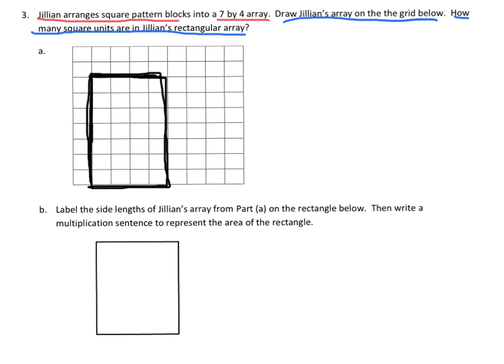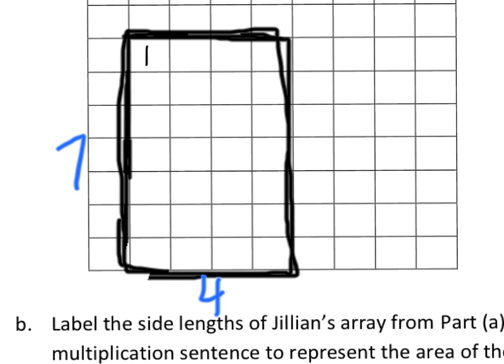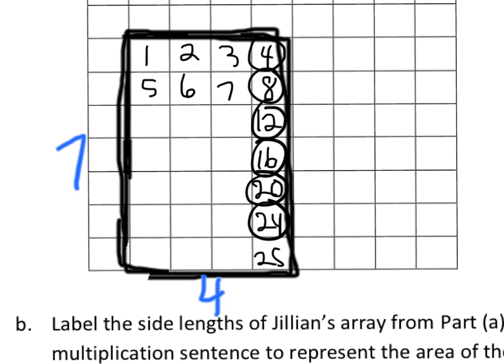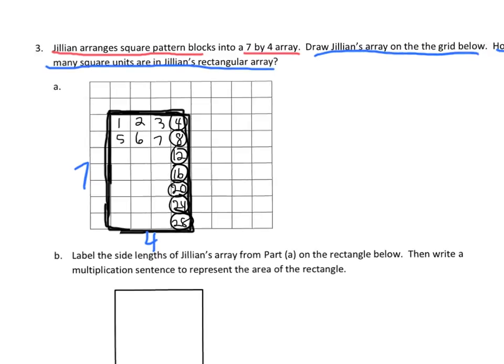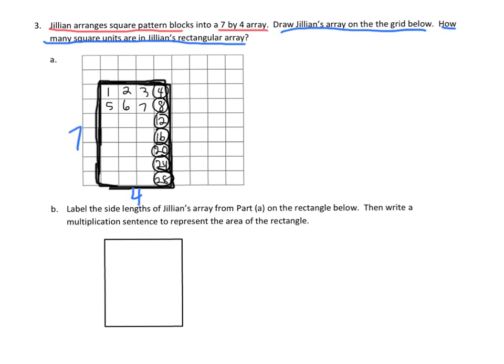So there is our 7 by 4 array. The question is, well, how many square units are in this rectangular array? Students can have a choice: they can either count the individual squares or use their multiplication. I'm going to zoom in and do a quick count: 1, 2, 3, 4, 5, 6, 7, 8. Here's our skip counting: 4, 8, 12, 16, 20, 24, 28. We can see that the answer is 28 square units.